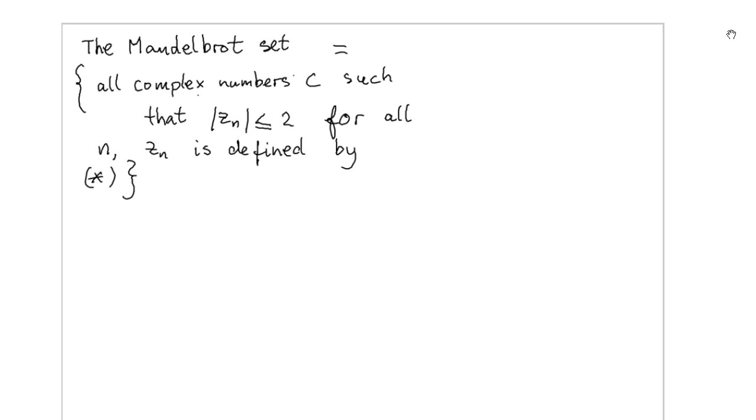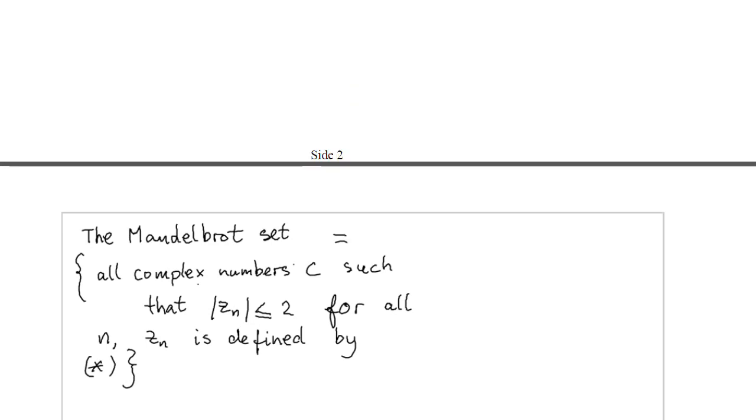Now we are going to define the Mandelbrot set. It contains all complex numbers C, such that the absolute value of z_n is less than or equal to 2 for all n, and where z_n is defined recursively by the formula star defined above.